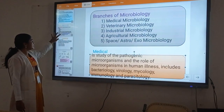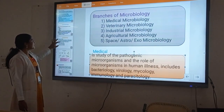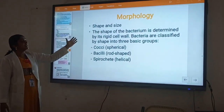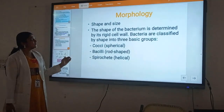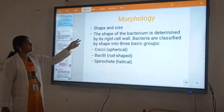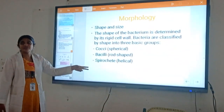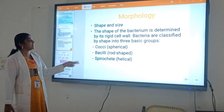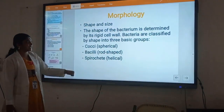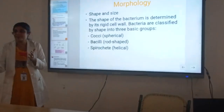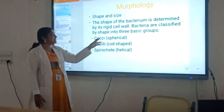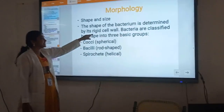And then we can go over the morphology of bacteria. In the morphology of bacteria, we can see that bacteria are usually divided into different shapes, depending on the shape and size. The shape and size of bacteria are classified by themselves.